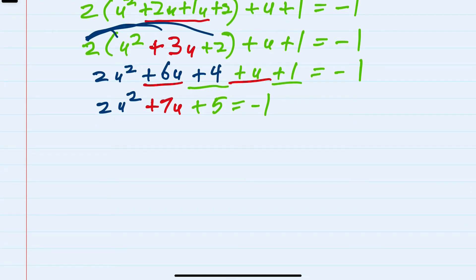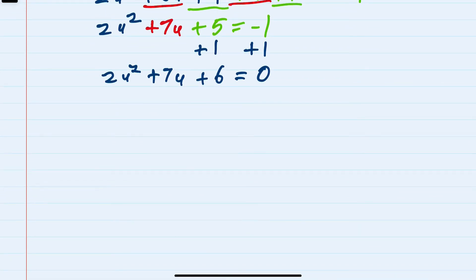Since it's a quadratic, I would need to set it equal to 0 and then factor. So to set it equal to 0, I would need to add this 1 from the right over to the left, giving me 2u squared plus 7u plus 6 equals 0. And I can factor this by the AC method, trial and error, or the quadratic formula.